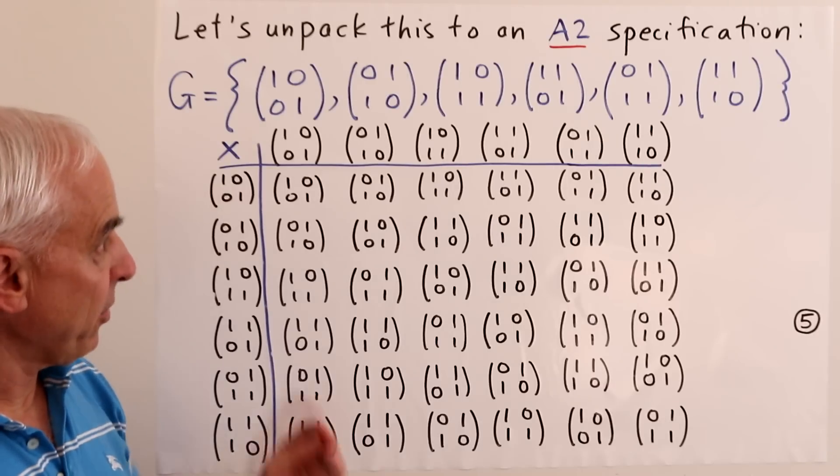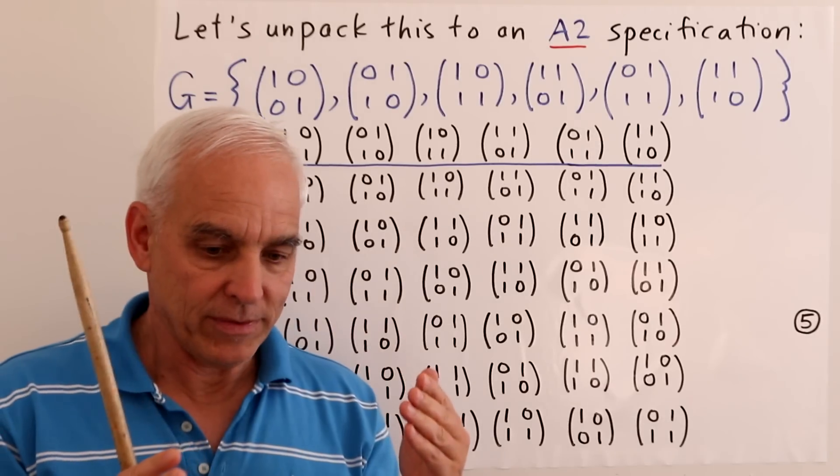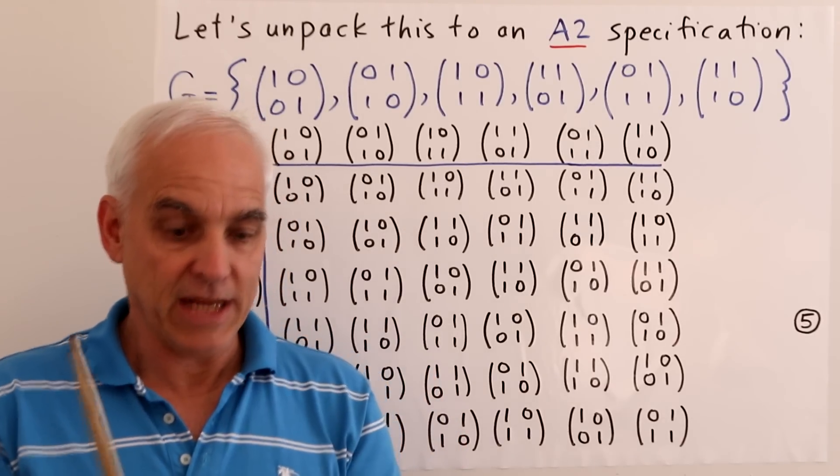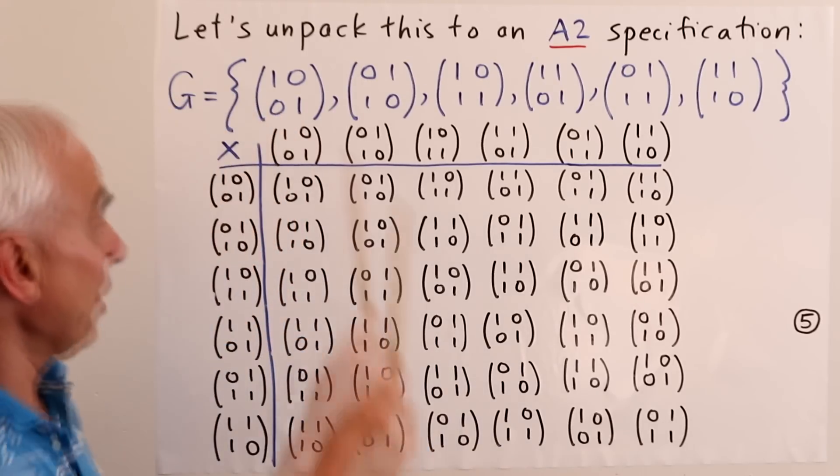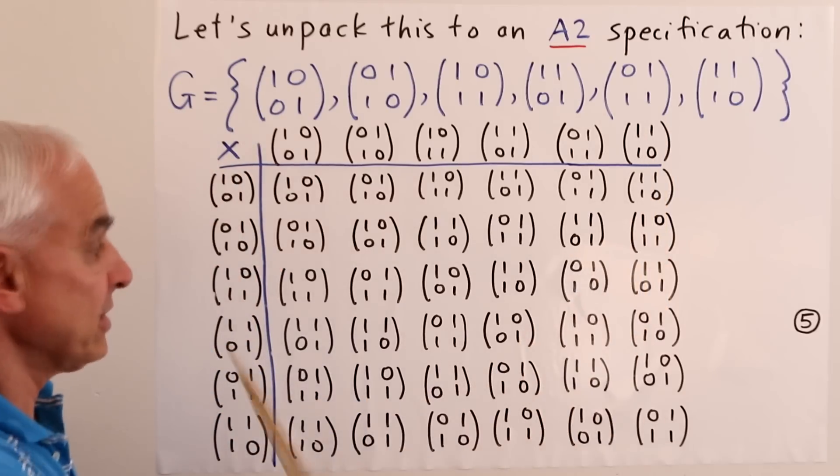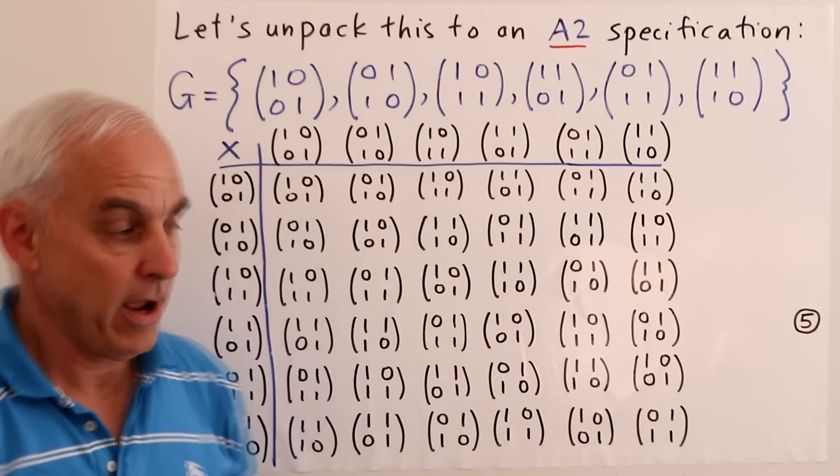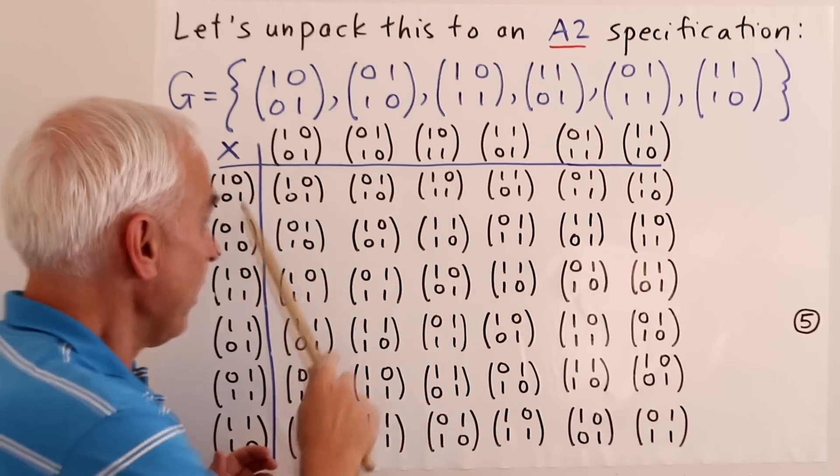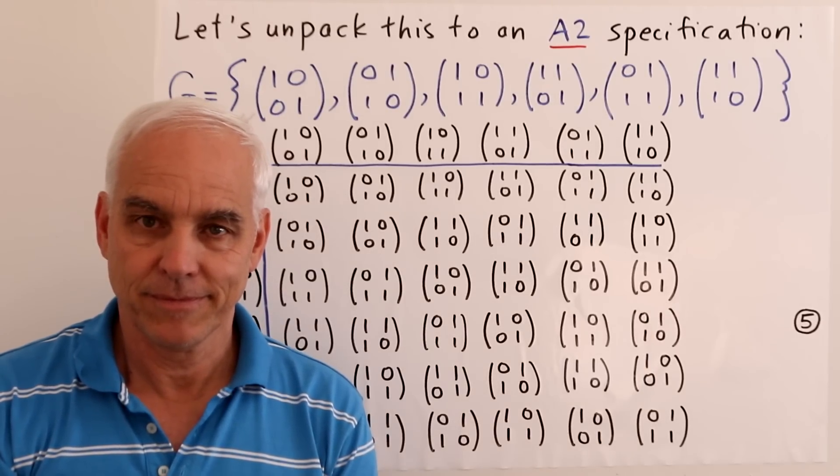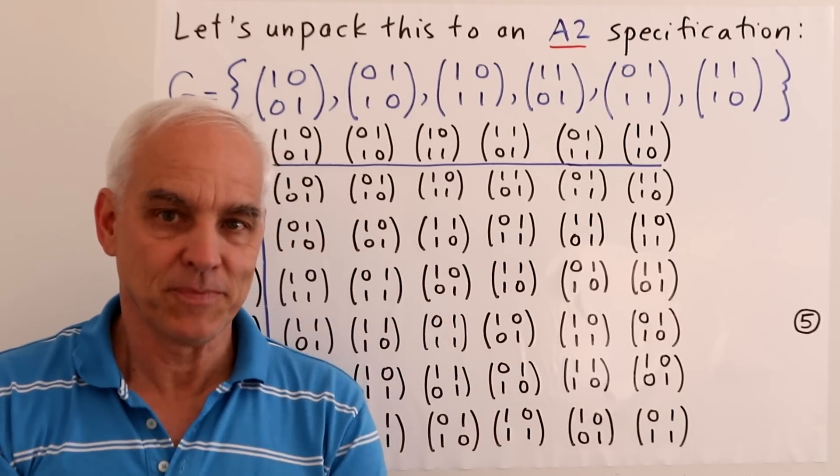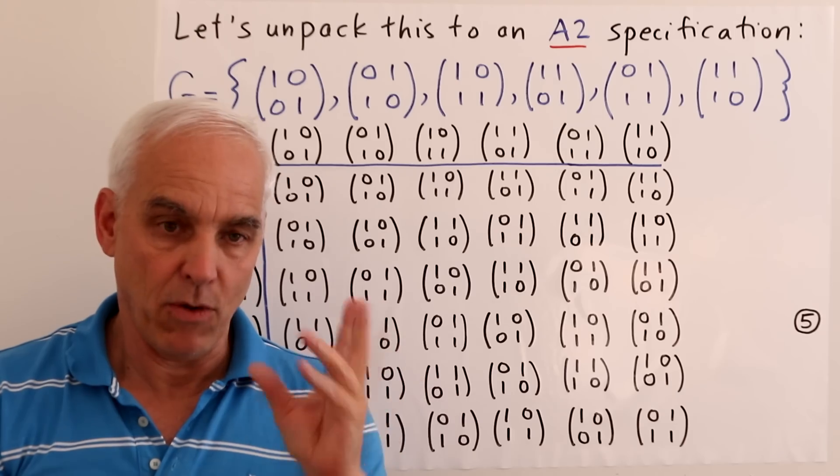So if we were thinking about groups in terms of the A2 definition, then we would say, aha, here is the definition of this group G. Here is the set. And here is the multiplication table, as given by this six by six array. It's different. It's a different way of thinking about what a group is.